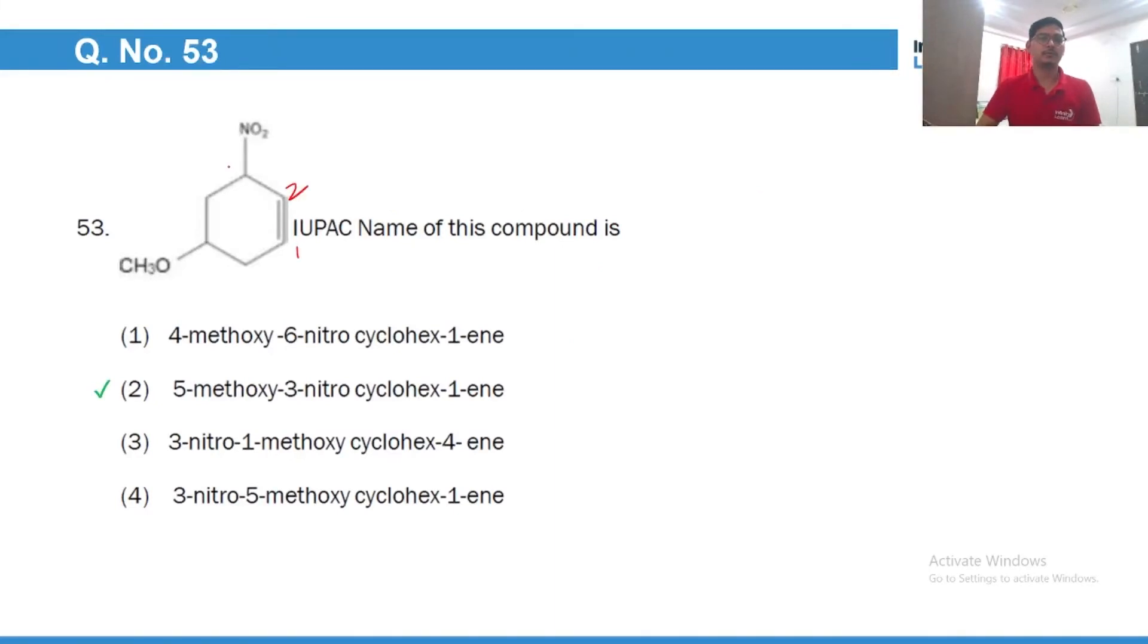Numbering would be 1, 2, 3, 4, 5, 6 because double bond would be given priority, and hence the name would be 5-methoxy-3-nitro-cyclohex-1-ene.